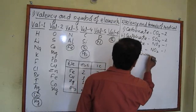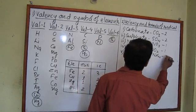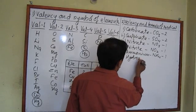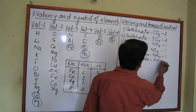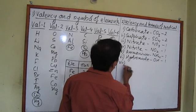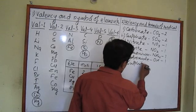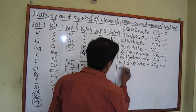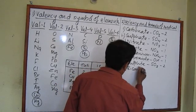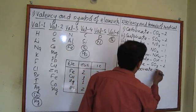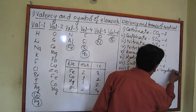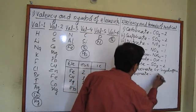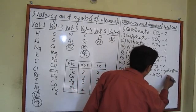Ammonium (NH4) has valency one. Hydroxide has valency one. Sulfite (SO3) has valency two. Bicarbonate, also called hydrogen carbonate, has the formula HCO3 and valency one.